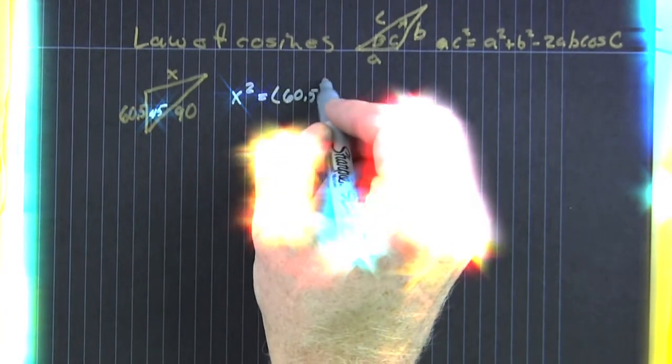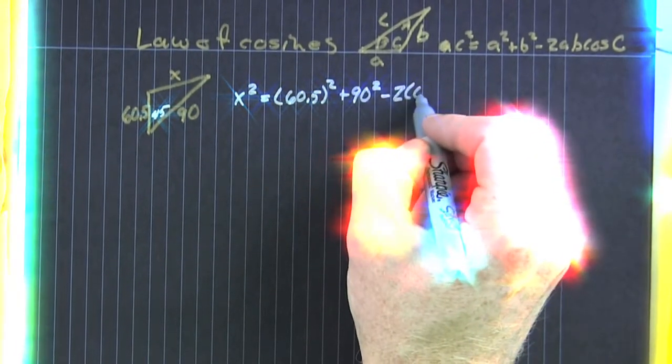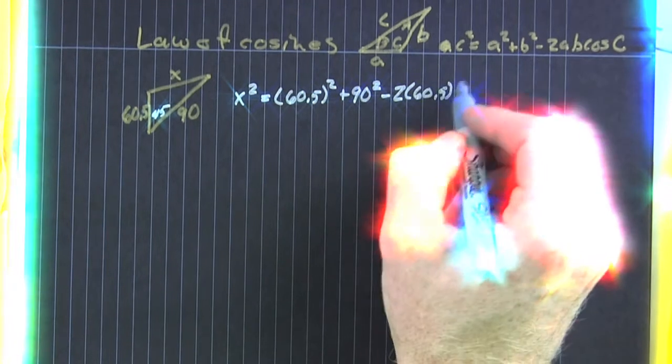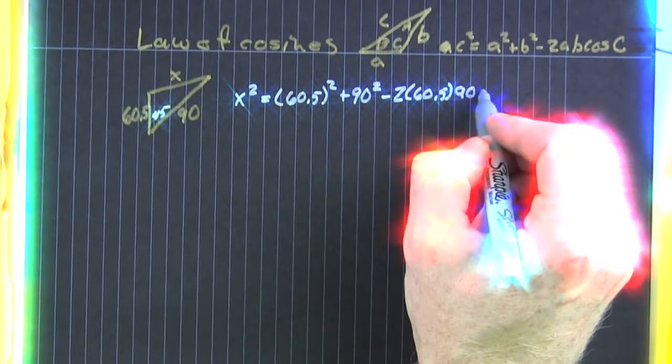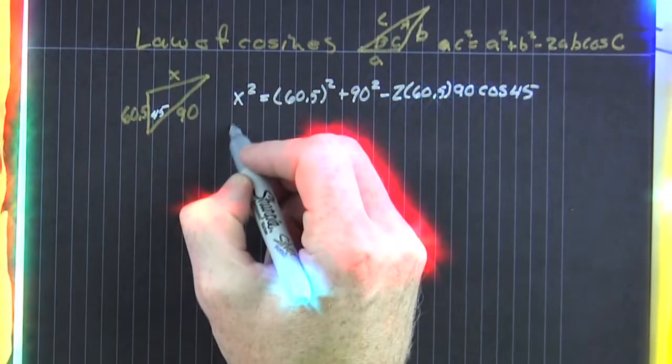So, we employ the law of cosines. 60.5 squared plus 90 squared minus 2 times 60.5, 90 times the cosine of the angle between them, 45. Now, when we pound this out, we're going to get x squared.